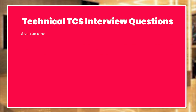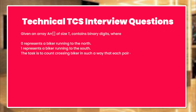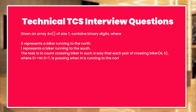Given an array ARR of size T containing binary digits where 0 represents a biker running to the north and 1 represents a biker running to the south, the task is to count crossing bikers in such a way that each pair of crossing bikers N and S, where 0 is less than N, N is less than S, and S is less than T, is passing when N is running to the north and S is running to the south.